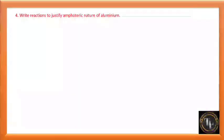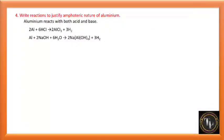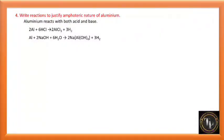Write the reaction to justify the amphoteric nature of aluminium. Amphoteric means aluminium can act as both acid and base. Aluminium reacts with acid (HCl) to give AlCl3 and H2, and reacts with a base (NaOH) to give sodium aluminium hydroxide and H2. These two reactions indicate that aluminium behaves as amphoteric in nature.